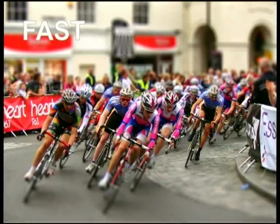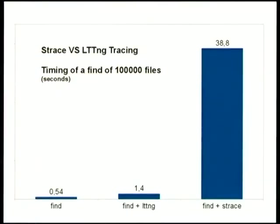We claim tracing is quite fast. Here's a small comparison: running 'find' on 100,000 files takes about half a second. Running it with LTTNG capturing all syscalls and kernel events adds about one second to the whole trace. Doing the same with strace takes about 40 seconds. So if you want minimal impact on your system while getting real-time information, LTTNG is the right tool.